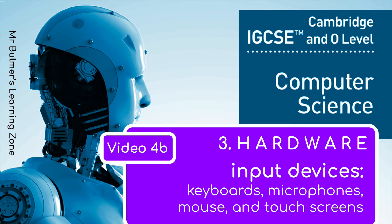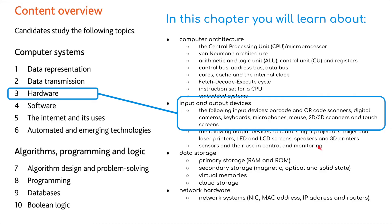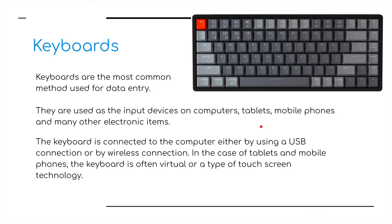Welcome back to the second part, the final part of input devices, under the third topic: Hardware for IGCSE Computer Science from Cambridge. In this video we're going to look at keyboards, microphones, mice, and touch screens. We are halfway through the third chapter, Hardware — it's a very big chapter. Let's start with keyboards.